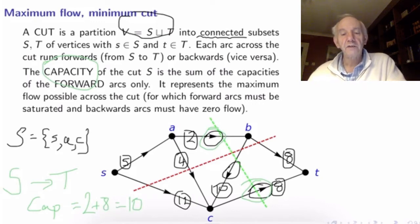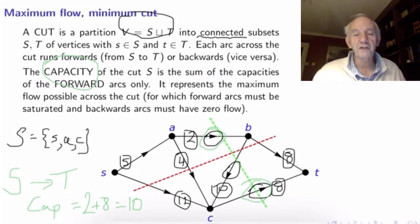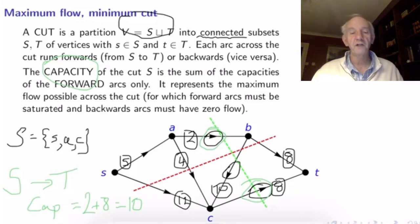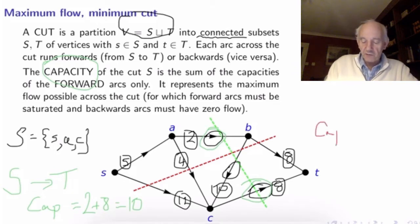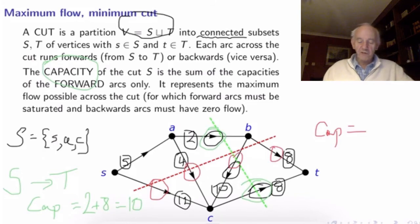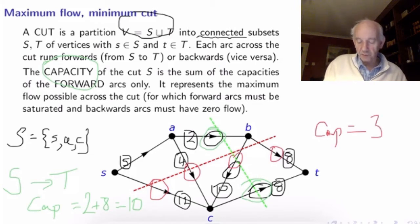In this case the capacity is just 2 plus 8, so the capacity of this particular cut equals 10. It turns out you can't find a cut of this network which has a lower capacity than 10. This is related to the theorem I shall try to prove today: the minimum capacity cut is equal to the value of a maximum flow. We found a maximum flow of 10 across this network, so 10 is both the value of a maximum flow and the value of a minimum cut.